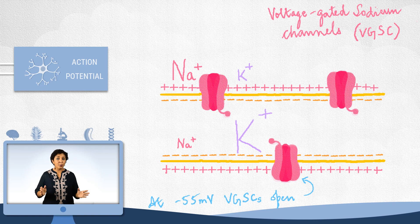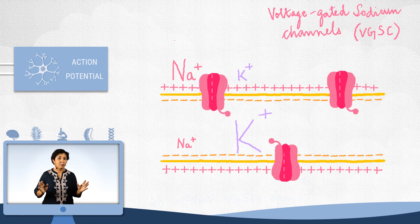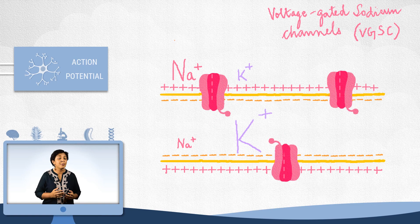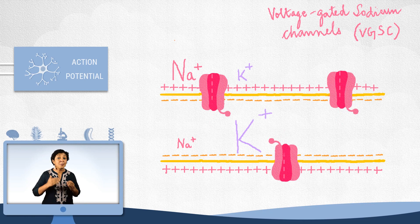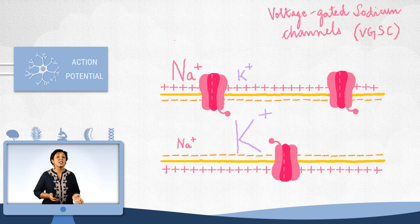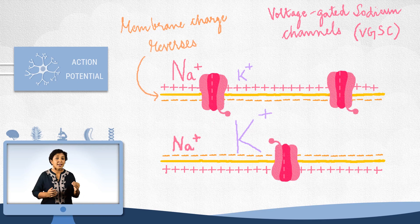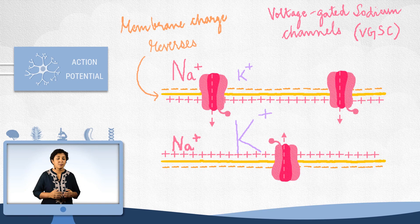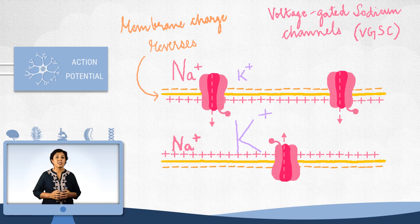And when these channels open, it completely changes the permeability for sodium. Sodium goes from being sparingly permeant to highly permeant. And all the sodium will rush in, depolarizing the membrane and increasing the voltage, opening even more voltage-gated sodium channels. Which means sodium coming in will cause even more sodium to come in. And this goes on until the membrane charge reverses, positive inside and negative outside. This is known as the depolarization stage.